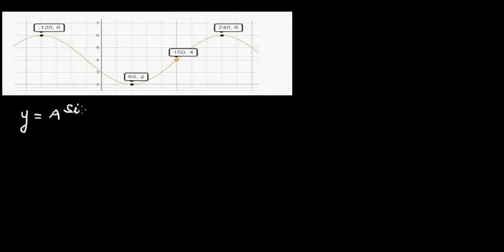In this video I want to explain how to write the equation of a sine or cosine graph. The equation of a sine or cosine graph can be given by this formula: y is equal to A times sine or cosine times 360 divided by B, times (x minus C), plus D.